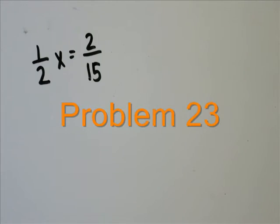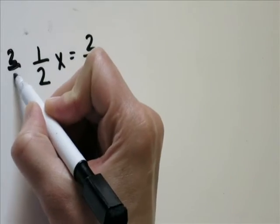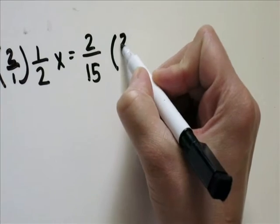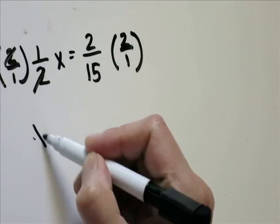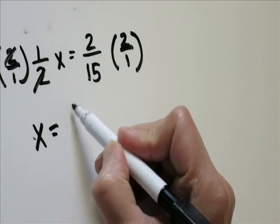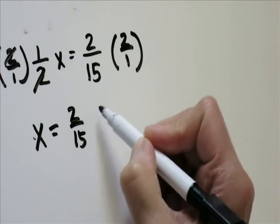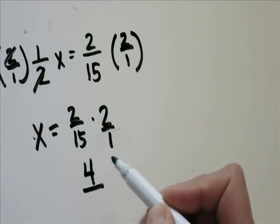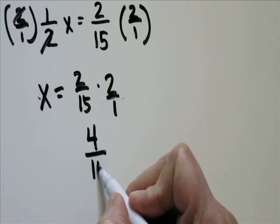1 half x equals 2 over 15. I'm going to multiply 2 by each side, which cancels that out, giving me x equals 2 fifteenths times 2. 2 times 2 is 4, 15 times 1 is 15. x equals 4 over 15.